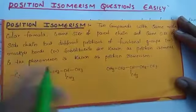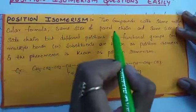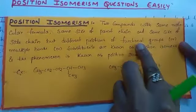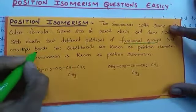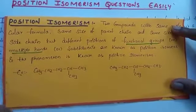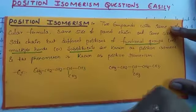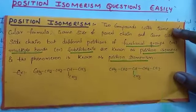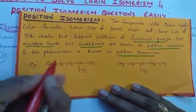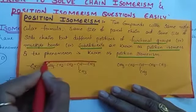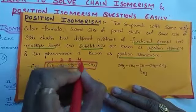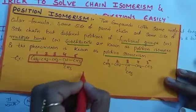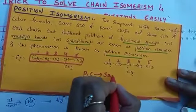Now let us see position isomers. Two compounds with the same molecular formula, same size of parent chain, and even the same size of side chain — but with different positions of functional groups, multiple bonds (double or triple bond), or substituents — are known as position isomers. For example, counting the longest chain in both structures gives 1, 2, 3, 4, 5 carbons in each. Parent chain is the same.